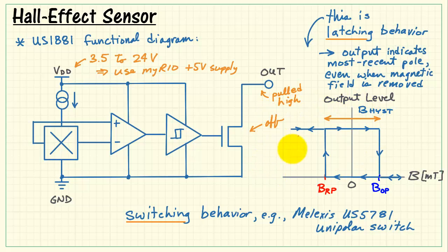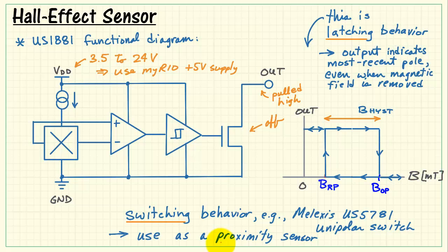In this case, our graph of output versus magnetic flux density would look like this. Neutral is back here. And then we are strictly looking at just whether or not a south pole of sufficient strength is applied or not.